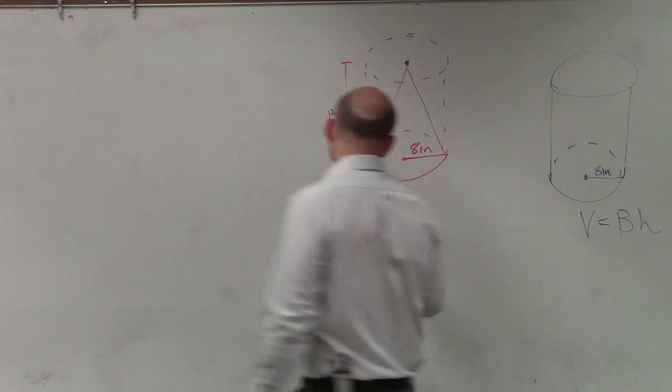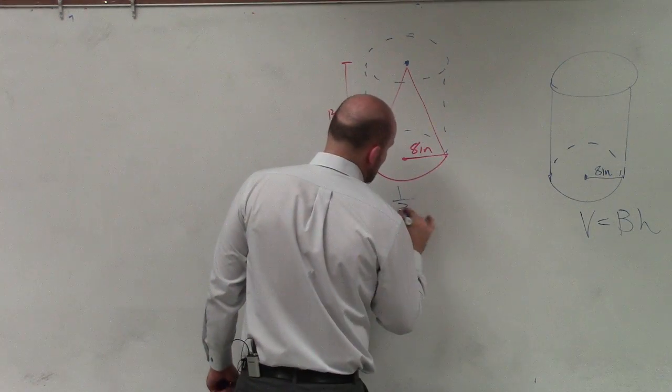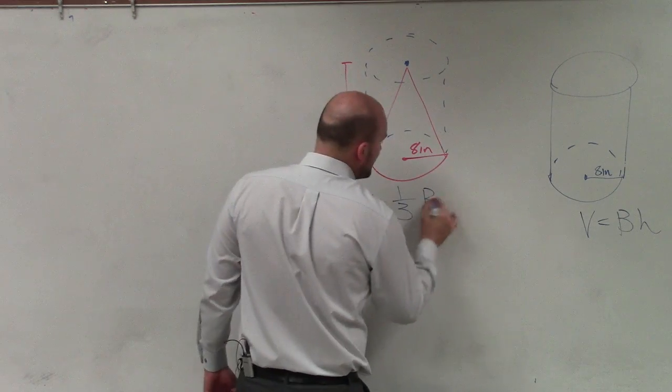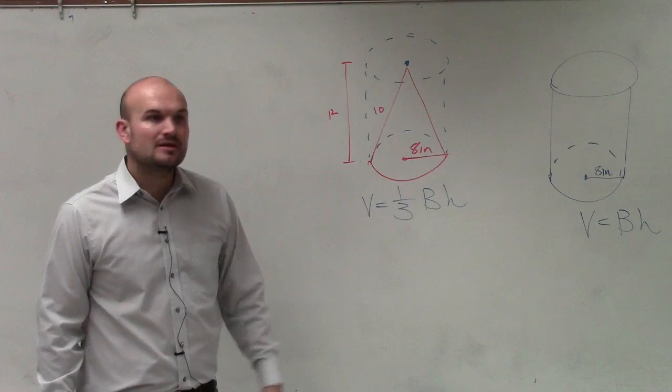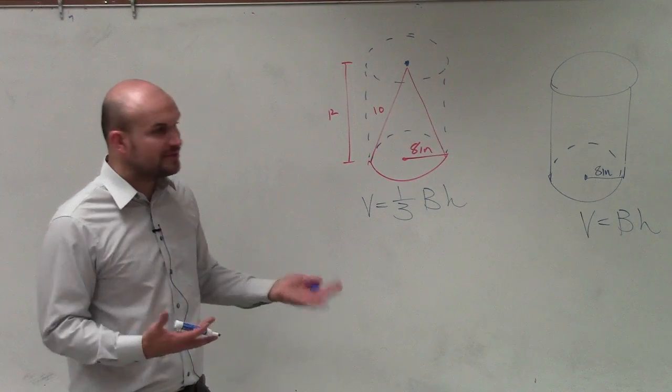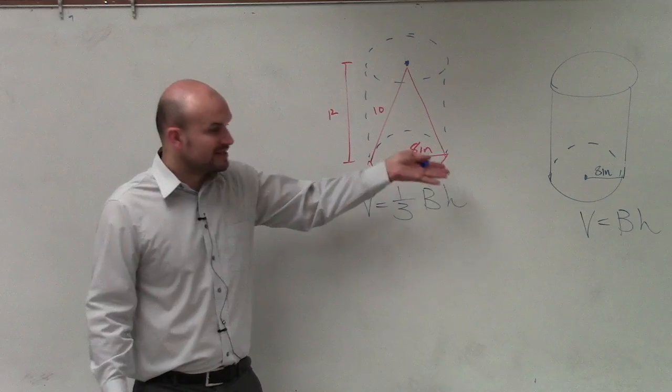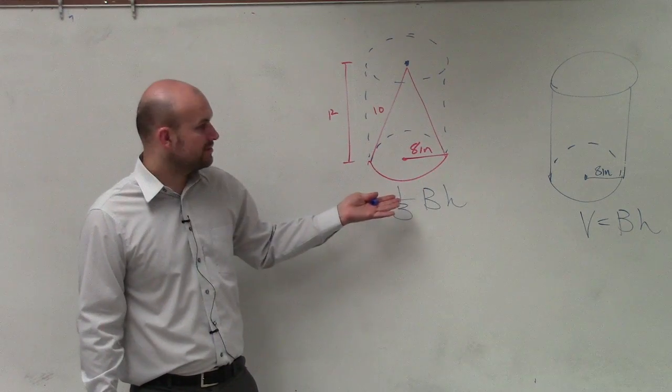And so we look at our formula, and the reason why that works, it's actually exactly 1/3 the size of the volume if it was a cylinder. So to do these problems, all we're simply going to do is apply the exact same formulas as we did for cylinders, but now multiply it by 1/3.